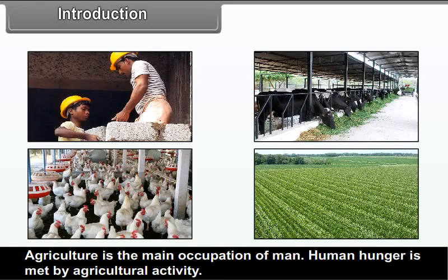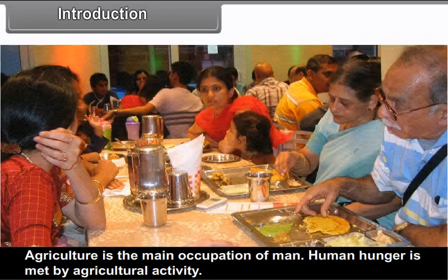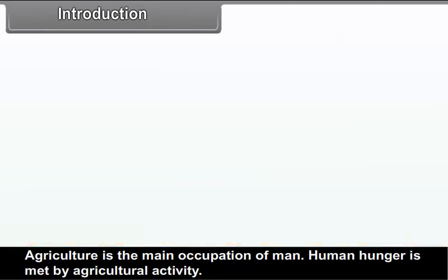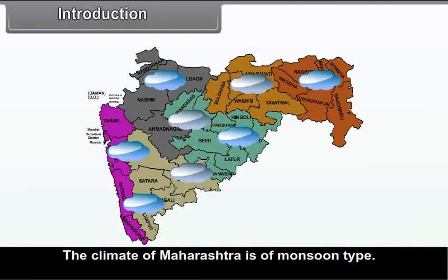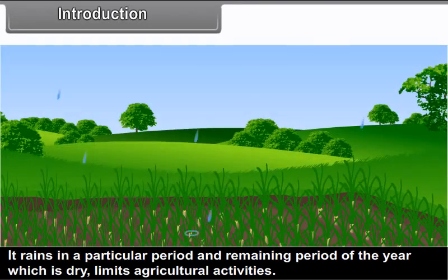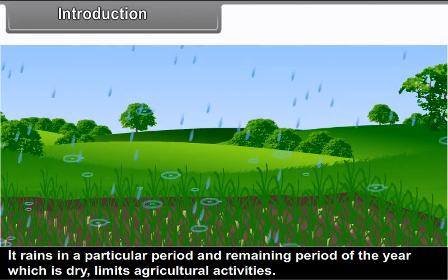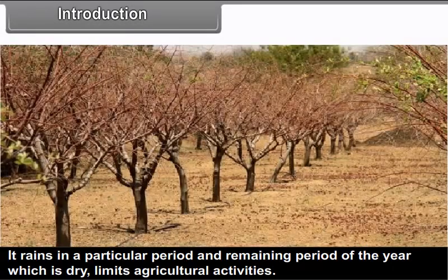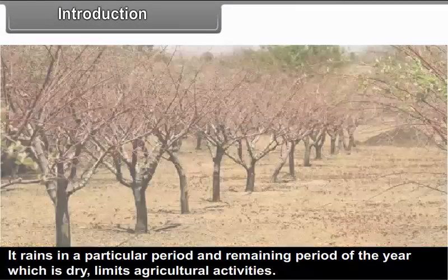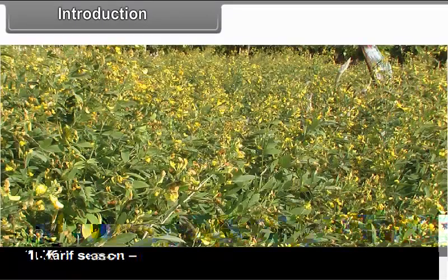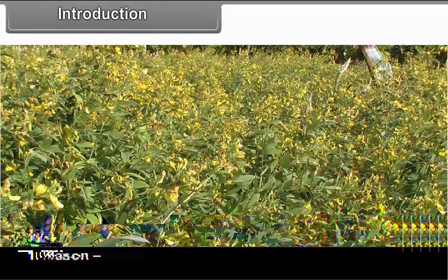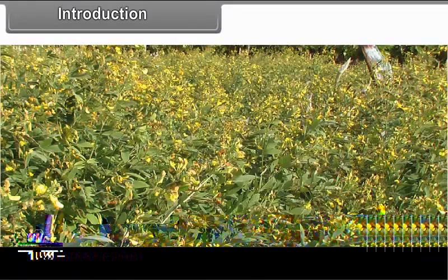Agriculture is the main occupation of man. Human hunger is met by agricultural activity. The climate of Maharashtra is of monsoon type. It rains in a particular period and the remaining period of the year, which is dry, limits agricultural activities. In Maharashtra, we have two different seasons of cultivation.